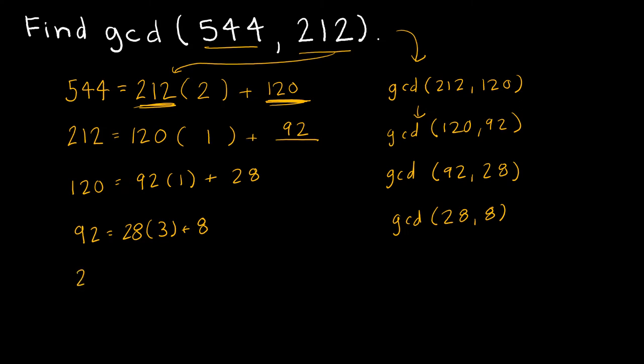Then I'm going to say 28 is equal to 8 times 3 plus 4. So now I want the GCD of 8 and 4.